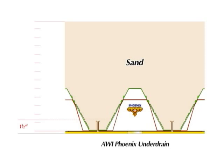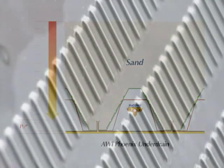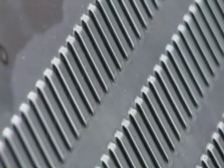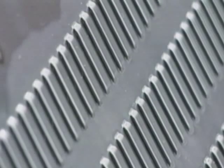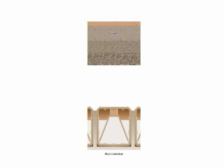The AWI Phoenix under drain filters to within an inch and a half of the floor and requires no support gravel. Thousands of narrow slots along the face of each lateral prevent fine media from entering the affluent circuit.